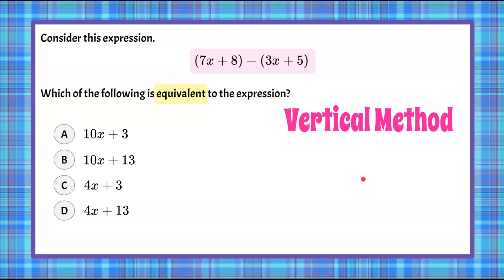So we're going to take the first expression in parentheses, 7x plus 8, and we are going to subtract the second expression, 3x plus 5. And when we stack these, we want to make sure that we have like terms. So these both have an x, so there are x terms or variable terms, and these are both constants. So we want to make sure when we use the vertical method that we're stacking like terms one on top of the other.